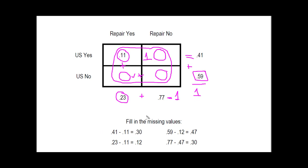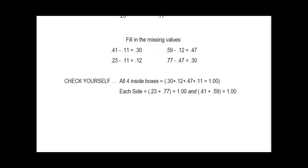I simply have used subtraction to fill in the missing values. So 41 minus 11 gives me 30. The 59 minus the 12, because 23 minus 11 gives me 12 here. So 12 plus some number is 59, that gives me my 47. As long as I have one inside box, I can use subtraction to get my filled in matrix. Always make sure that all four inside boxes equal 1, and make sure that each side equals 1. As soon as you verify that, you can go ahead and begin to solve.